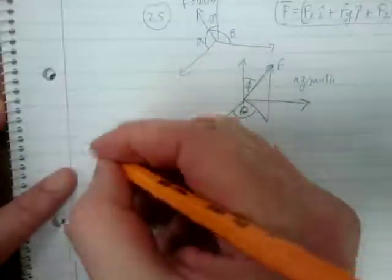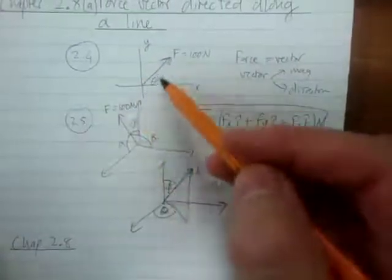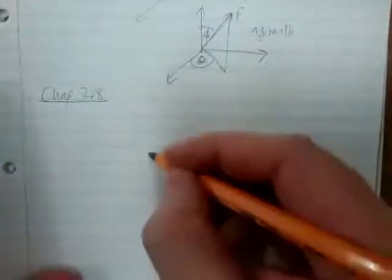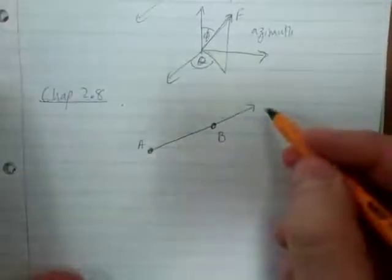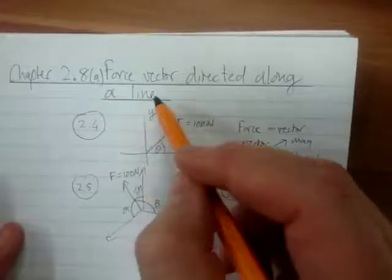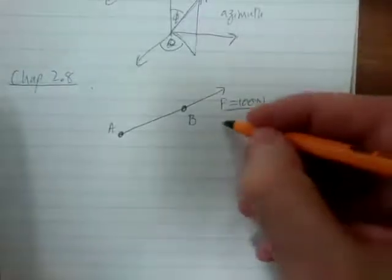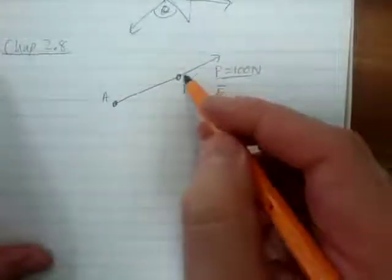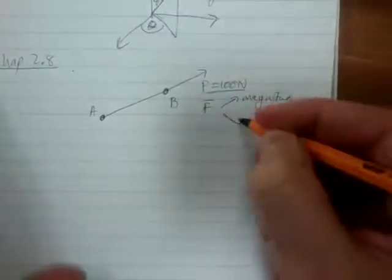Now in Chapter 2.8, another way that forces are represented is with two points — say point A and point B — where the force is acting along the line passing through those two points. That's why this chapter is called Force Vector Directed Along a Line. So again, say we have a force of 100 Newton — we've got a magnitude — but we want to convert it into Cartesian Vector Notation. With two points instead of angles, we have the magnitude, but how do we determine the direction?